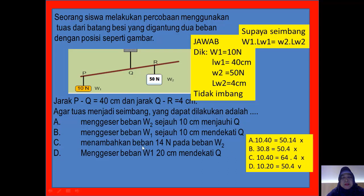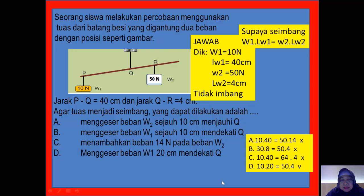Yang C: menambahkan beban 14 Newton kepada W2. Beban 2 sudah berat ditambahin lagi. Coba kita lihat: 10 kali 40 sama dengan 64 dikali 4? Tidak sama, jawabannya tidak sama. Berarti salah.